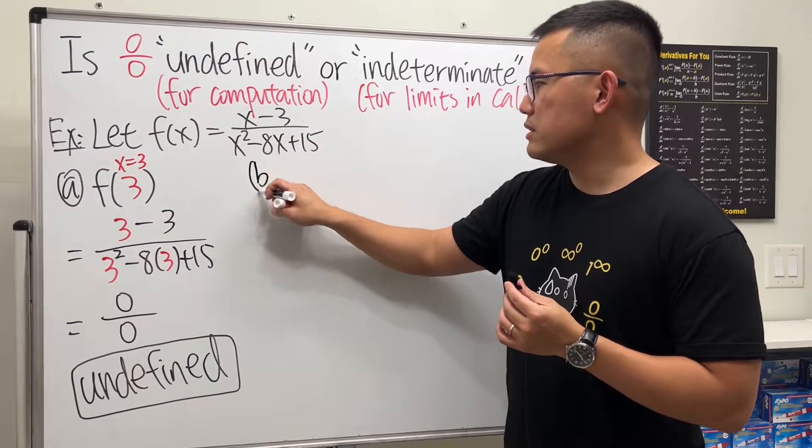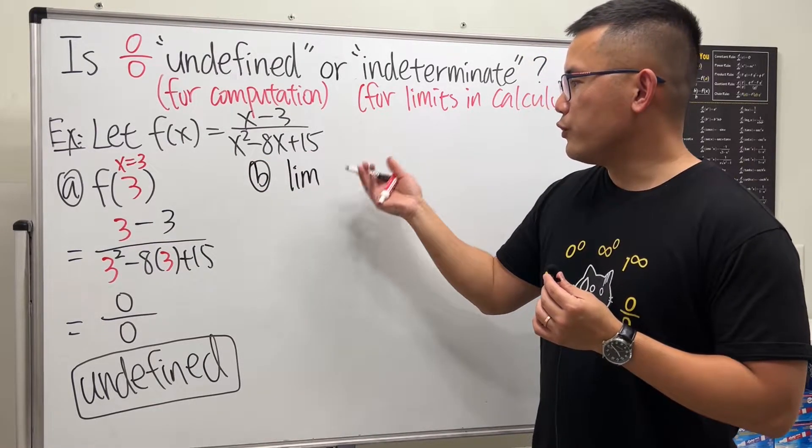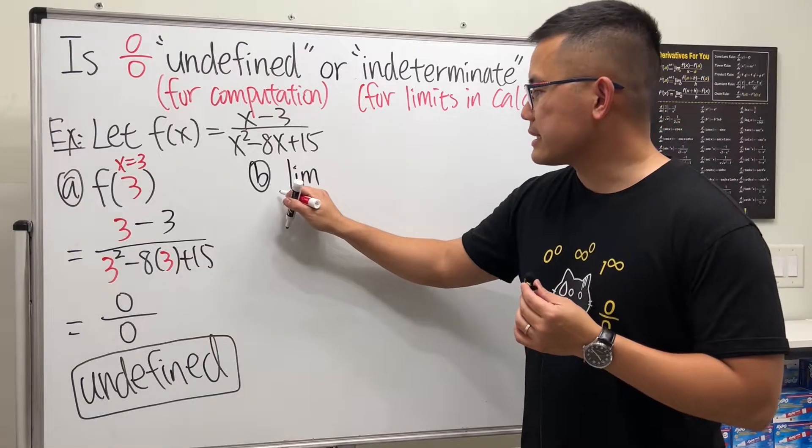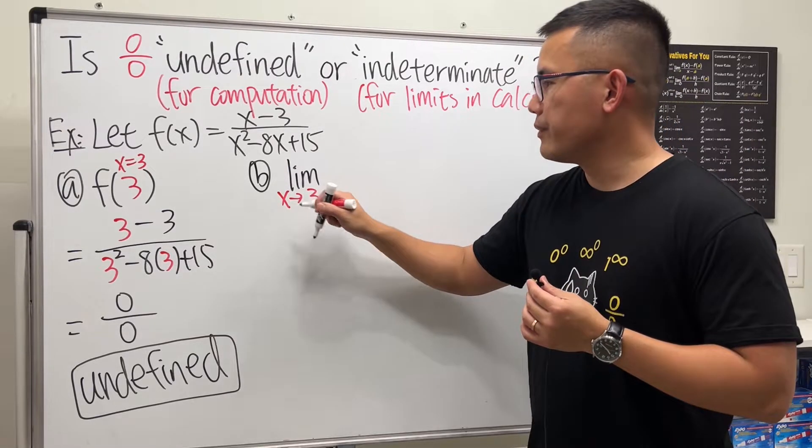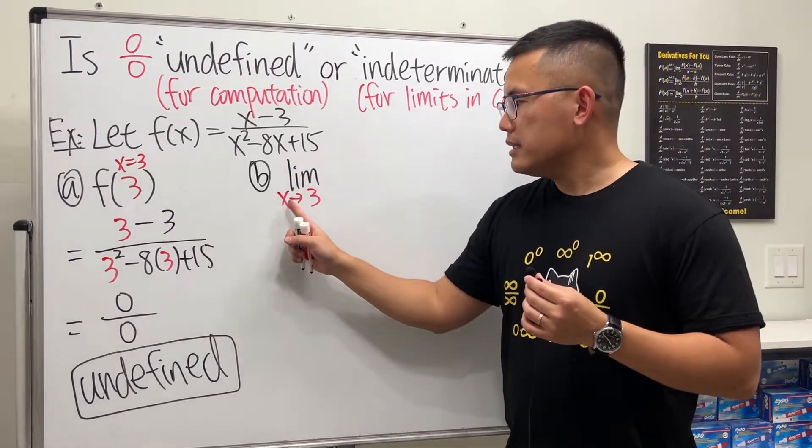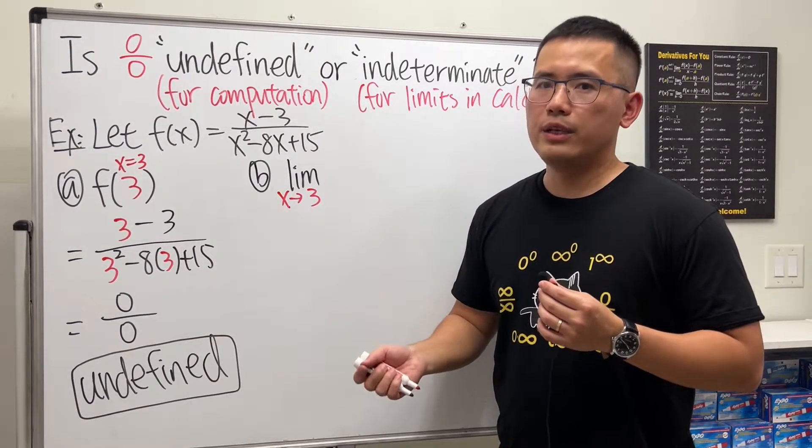So here we answer it as undefined, and then done. That's it, no other things that you have to do. But once we get to limit, it's a little bit trickier. So let's say if we have the limit as x approaching 3. Keep in mind, when x is approaching 3, we are not saying x is exactly equal to 3.